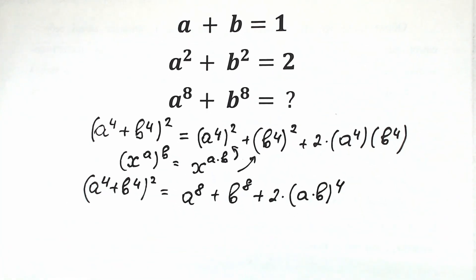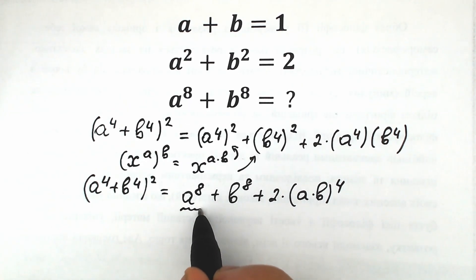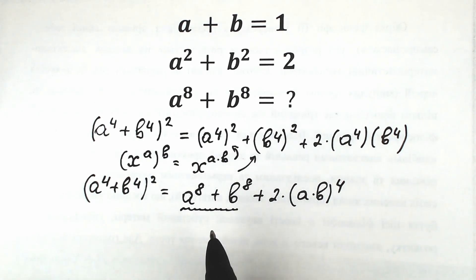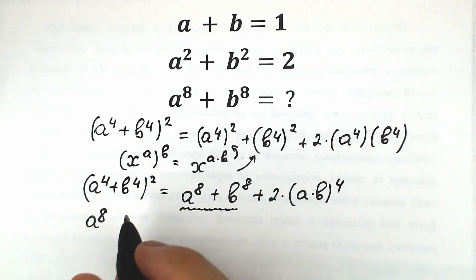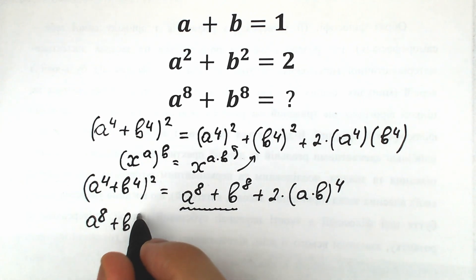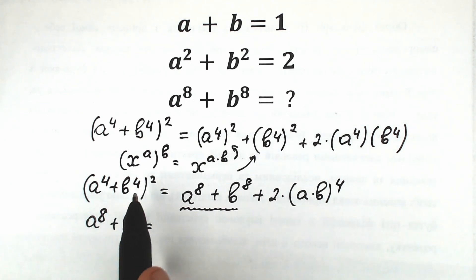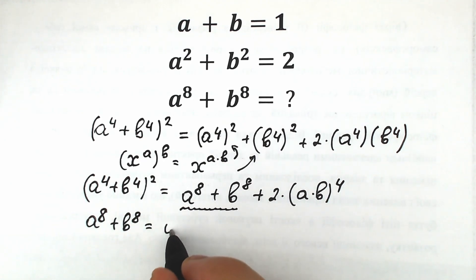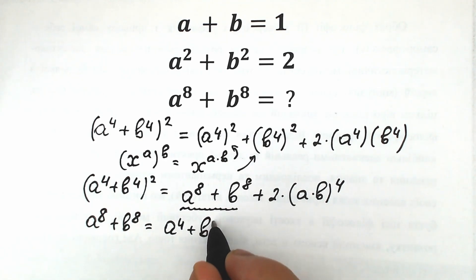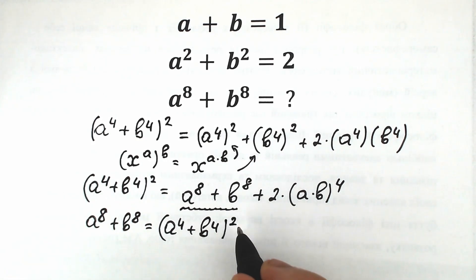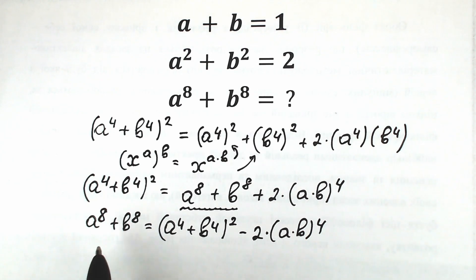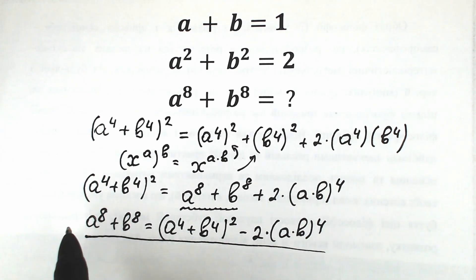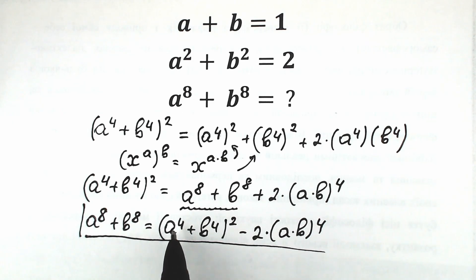Looking closely, we need to find a to the 8th power plus b to the 8th power, and we have exactly that expression here. So a to the 8th plus b to the 8th equals this parenthesis minus the remaining term — equal to (a to the 4th plus b to the 4th) squared, minus 2 times (a times b) to the 4th power. This expresses the 8th power in terms of the 4th power.